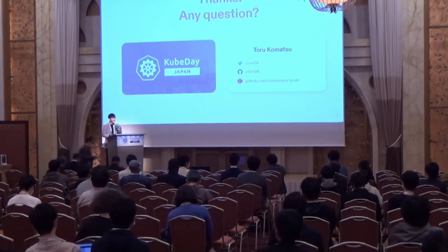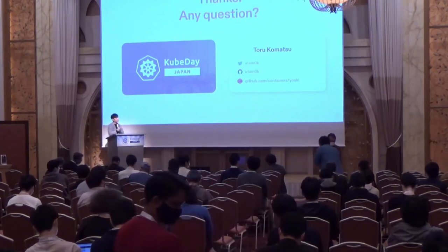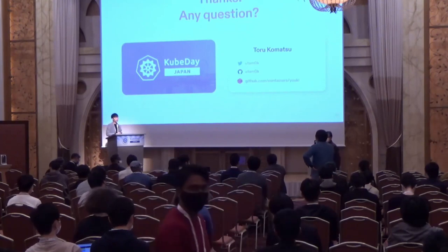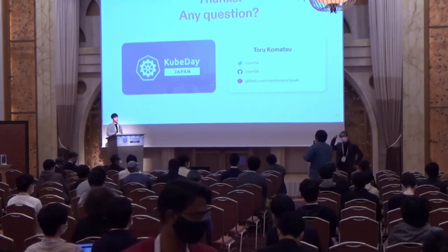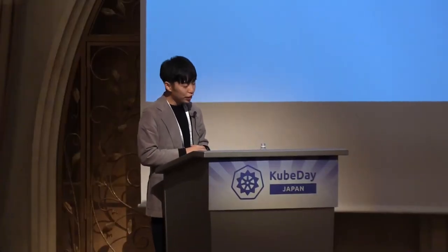Thank you for your presentation. Do you have any unsafe code? Unsafe as in Rust unsafe? Yes, good question. Of course, Yoki has some unsafe code because we have to use system calls directly. For example, fork is unsafe in Rust.